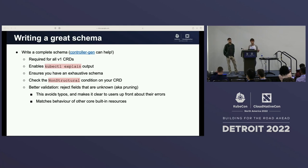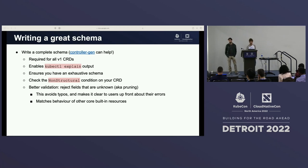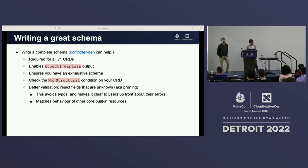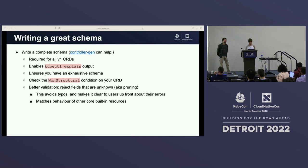Even capitalization or just the wrong word — if users don't know there's an error there, they end up pushing things out and making assumptions about how their resource is going to work that just don't hold true. This matches the behavior of other core built-in types, which is really important because people are already familiar with Kubernetes and it's already complex. We want to really reduce that cognitive overload and overhead.